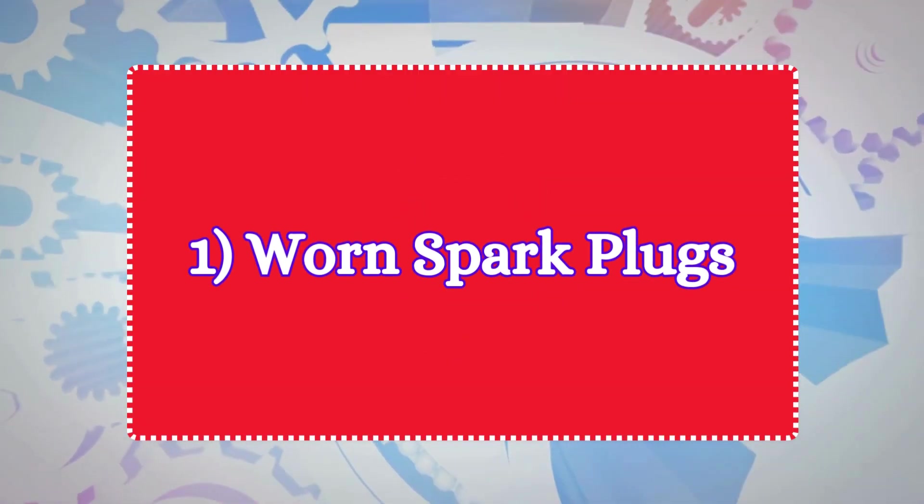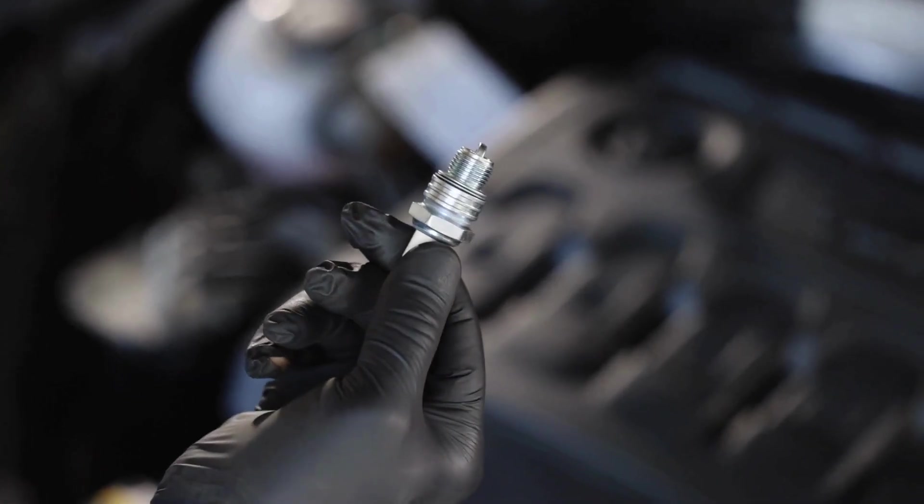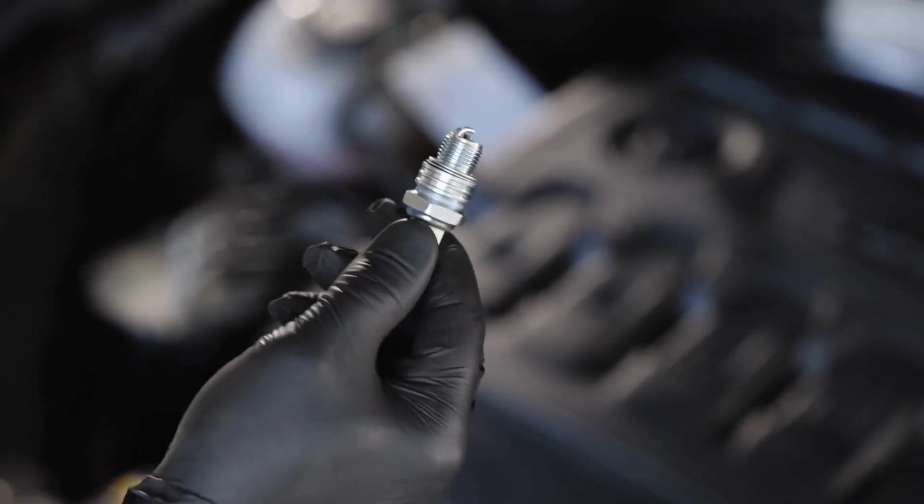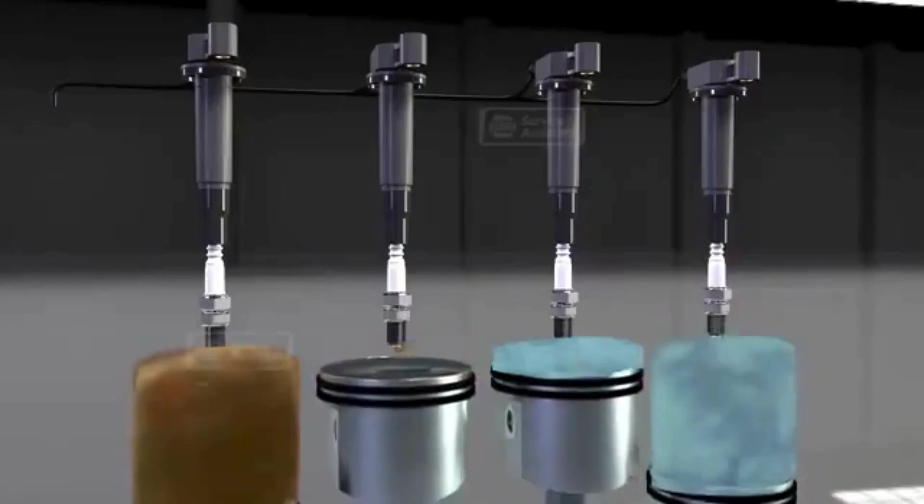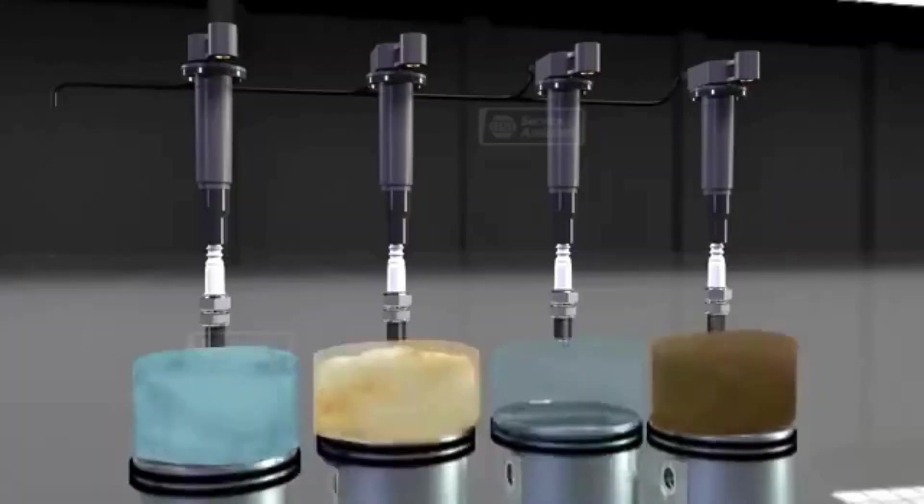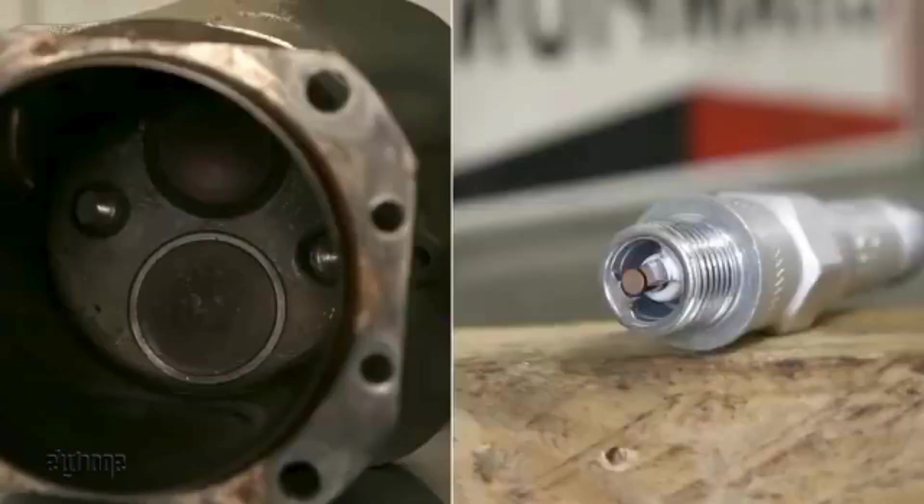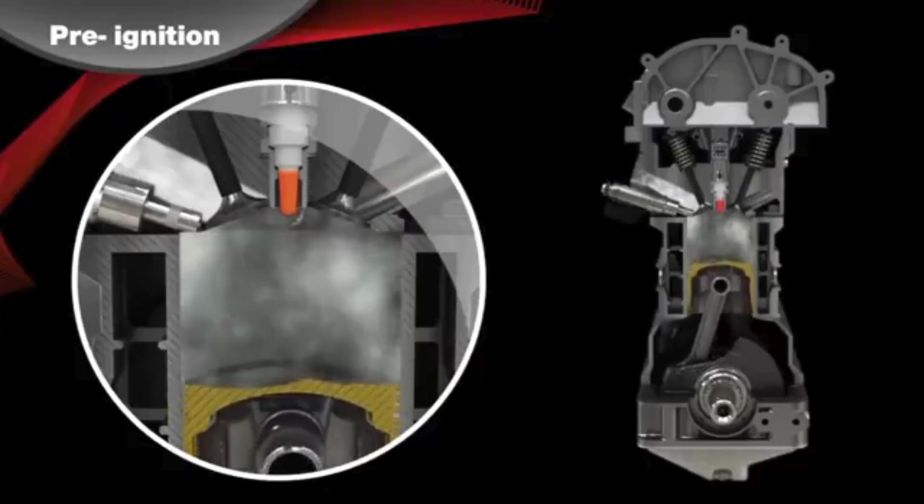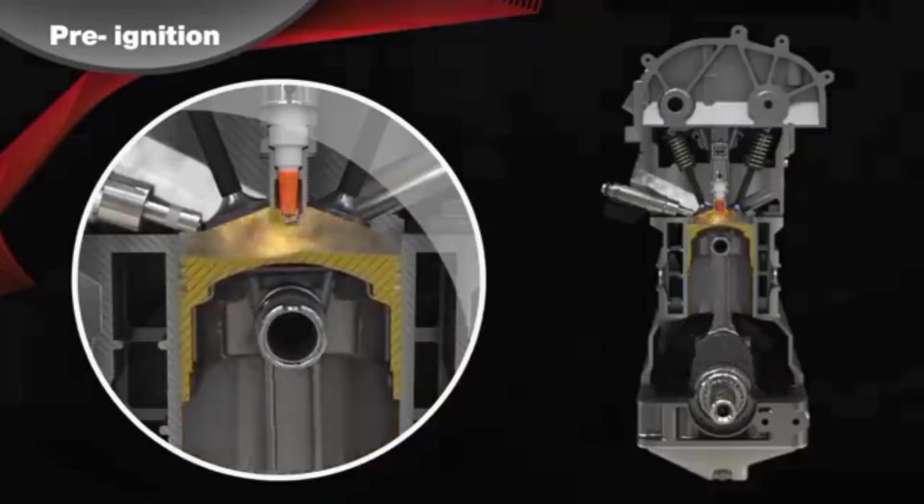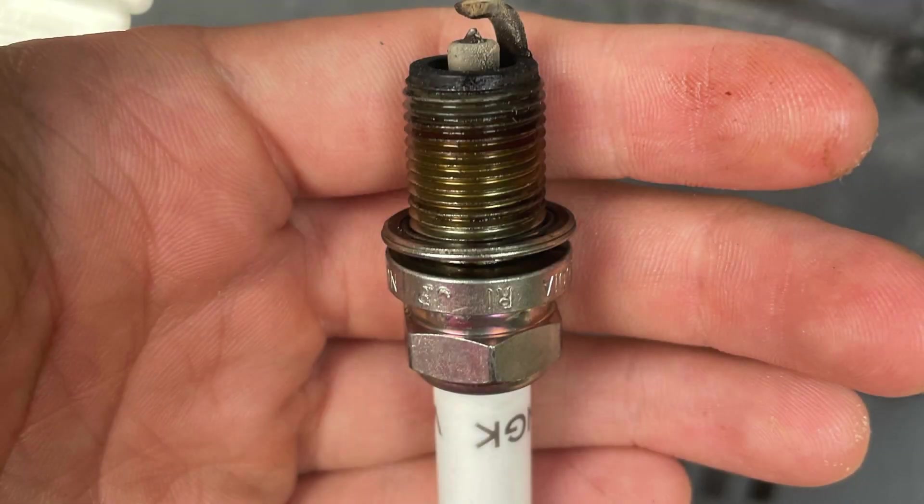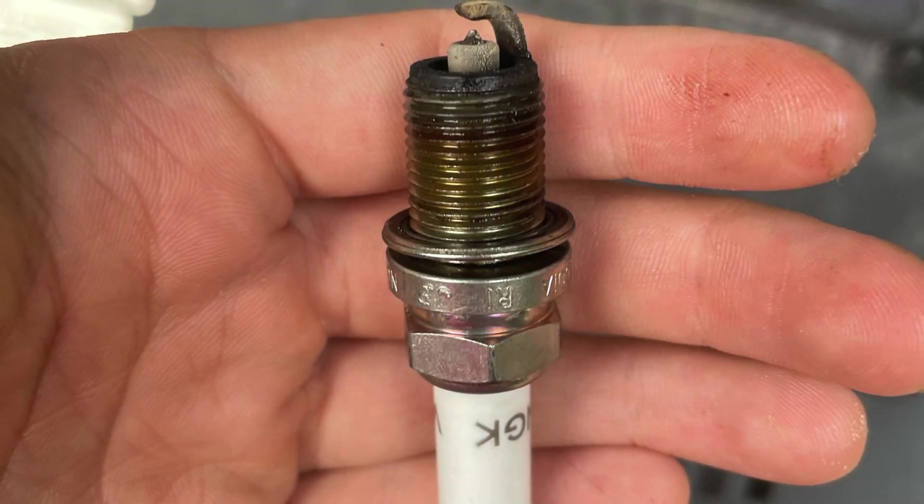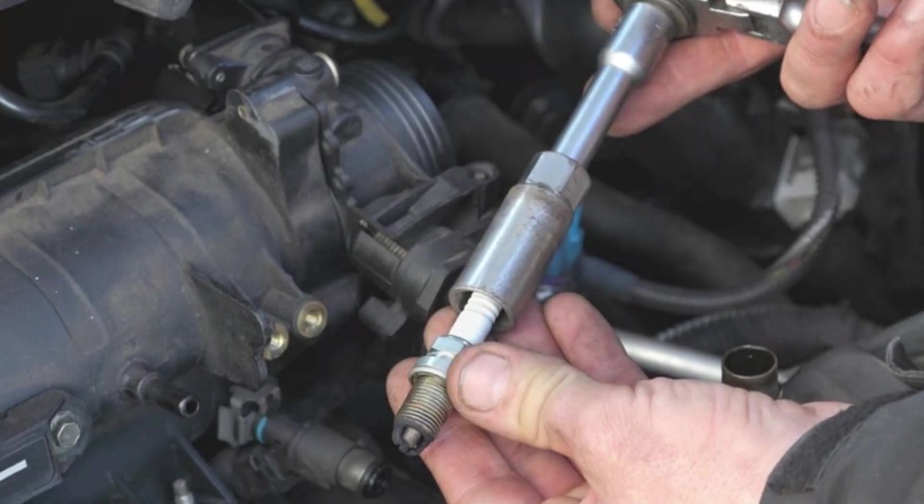1. Worn spark plugs. A worn spark plug is one of the most common reasons of car stuttering or jerking while driving. Spark plugs ignite the air-fuel mixture inside the engine's cylinders. If they are worn out, they may lead to incomplete combustion, causing the engine to misfire, which may result in the car jerking during acceleration. Look at this old spark plug here, all worn and corroded. If yours looks like this, it's time to replace it.